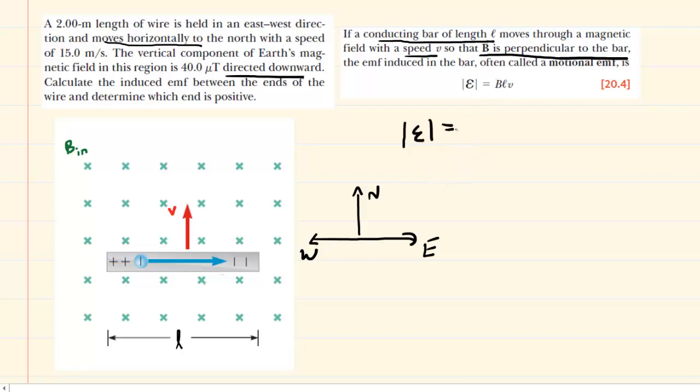So the induced EMF will equal the magnetic field. Be a little careful here. The magnetic field is given, but it's given in microtesla. So you're going to have to do 40 times 10 to the minus 6 tesla. That will convert microtesla into tesla.